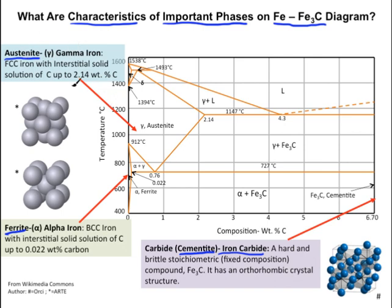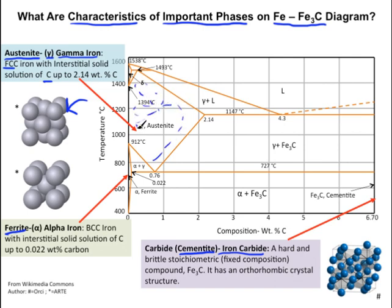Austenite is also known as gamma or gamma iron. It is face-centered cubic iron with an interstitial solid solution of carbon up to 2.14 weight percent carbon. Austenite is found in a specific region of the phase diagram, and it is a solid.